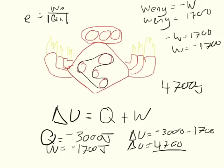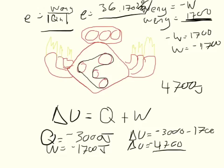The other thing I want to make explicit is it's the work of the engine. So it's positive 1,700 over positive 3,000. So the efficiency of the engine is 36.1702%.